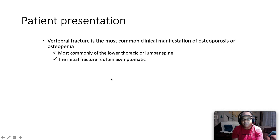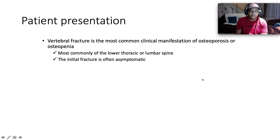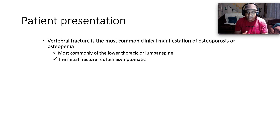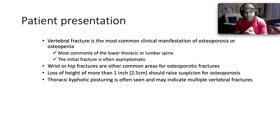How do patients present? Vertebral fracture is by and large the most common clinical manifestation of osteoporosis or osteopenia. It's most common in the lower thoracic or lumbar spine, and the initial fracture is often asymptomatic — patients don't even know they have it. Wrist or hip fractures are the other common areas for osteoporotic fractures.